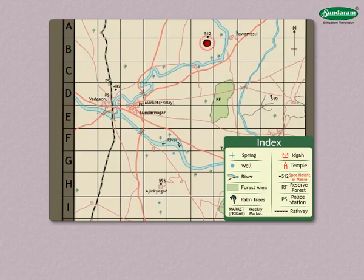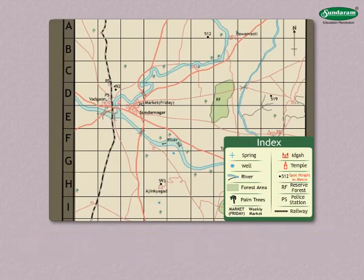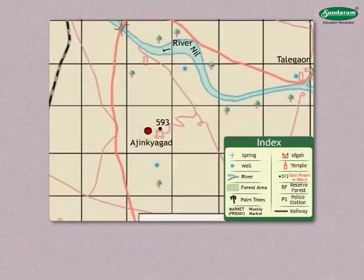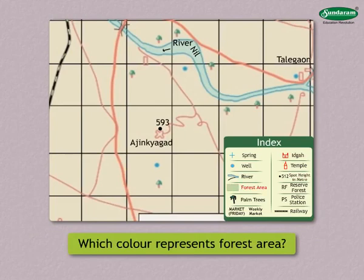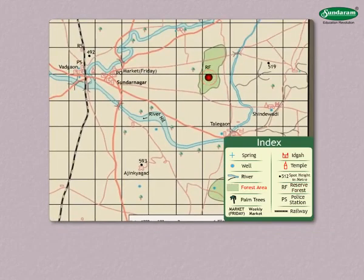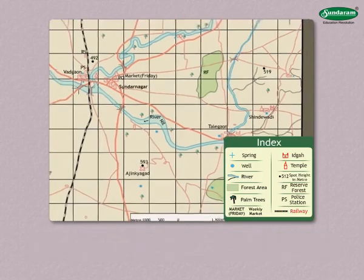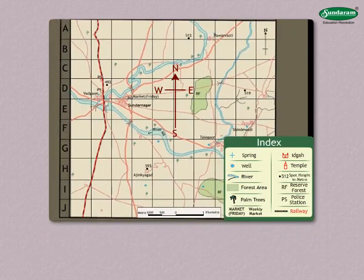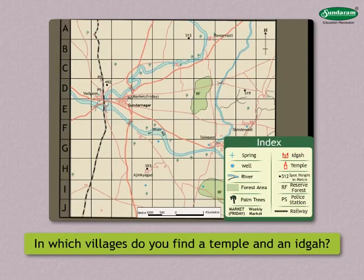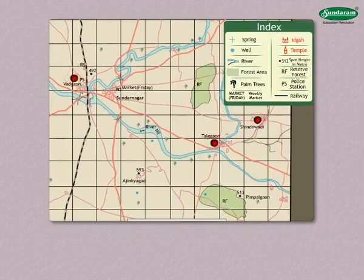Where is the place with the greatest height located? Answer: The place with the greatest height is located at A Jinkya Garh. Example: 512. Which color represents forest area? Which sign is used to show a reserved forest area? Answer: Green color represents forest area. RF is the sign used to show a reserved forest area. In which direction is the railway line in the map? Answer: The railway line in the map is in the west direction. In which villages do you find a temple and an Idgah? Answer: In Vargaon, Talegaon, Shindeewadi and Pimpalgaon we find temple and Idgah.